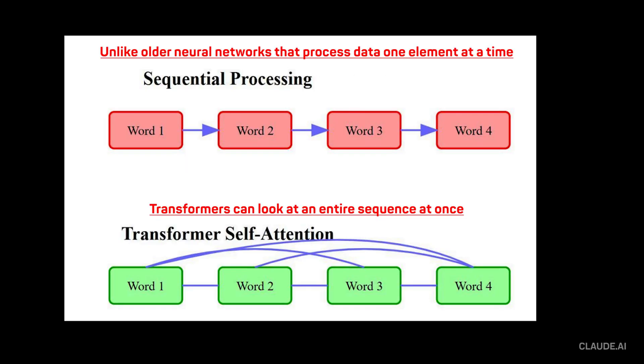Unlike older neural networks that process data one element at a time, transformers can look at an entire sequence at once through a mechanism called self-attention.